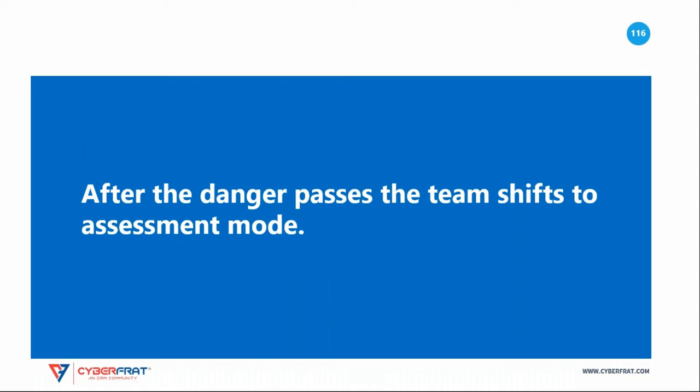After the immediate danger to the organization clears, the disaster recovery team shifts from immediate response mode into assessment mode. The goal of this phase is to trace the damage to the organization and develop a plan to recover on a permanent basis. In some circumstances this may also include intermediate steps that restore operations temporarily on the way to permanent recovery.